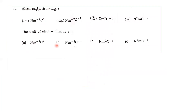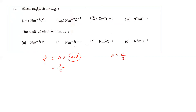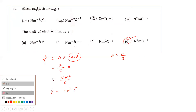Next question: the unit of electric flux. Electric flux equals E times A times cosine theta. Since E is force per unit charge, the unit is Newton per Coulomb times meter squared, which gives Newton meter squared per Coulomb. The correct answer is Newton meter squared per Coulomb.